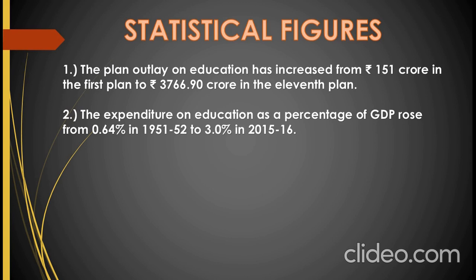The first point is that the plan outlay on education has increased from Rs. 151 crore in the first plan to Rs. 3,766.90 crore in the 11th plan. This means that in the first five-year plan, the government invested Rs. 151 crore on education, and this amount was increased to Rs. 3,766.90 crore in the 11th plan. So the government is making investment in the field of education and with time is also increasing this investment.